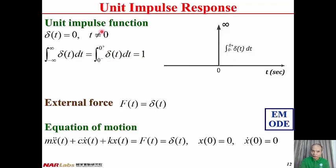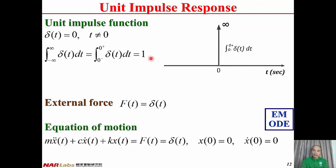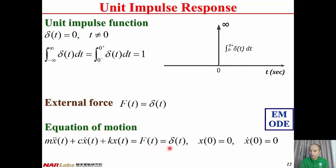Since δ(t) = 0 when T is non-zero, we can reduce the integration range from (−∞, ∞) to (0−, 0+), so the integral from 0− to 0+ of δ(t)dt equals one. If we assign the external force F(t) = δ(t), the equation of motion becomes Mx-double-dot + Cx-dot + Kx(t) = δ(t), with initial conditions: initial displacement x(0) = 0 and initial velocity x-dot(0) = 0.